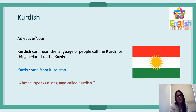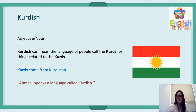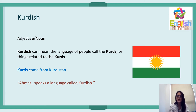The first word is 'Kurdish.' I had to look this up because I didn't really understand what language they speak in Syria, because there's more than one. Kurdish is an adjective or noun — it's the language of the people called the Kurds, or describes things related to Kurds, like Kurdish food. Kurds are from Kurdistan, and Ahmet speaks a language called Kurdish. See if you can use that word in a sentence of your own.